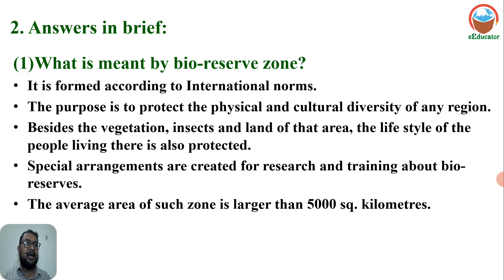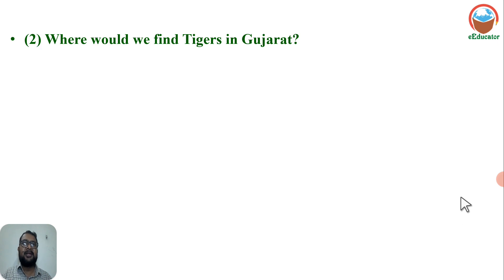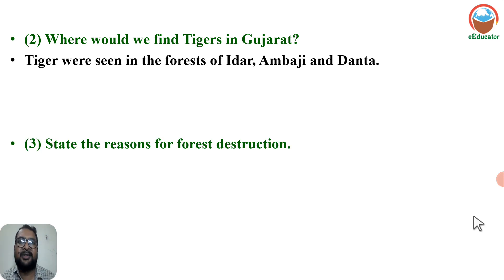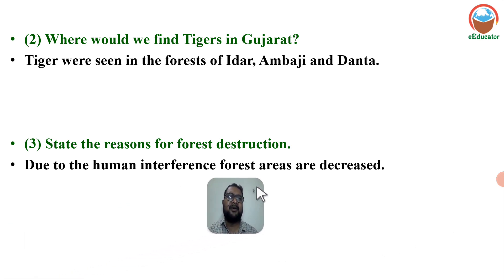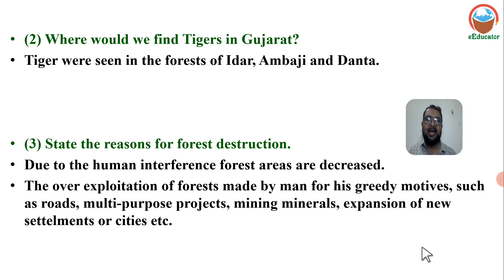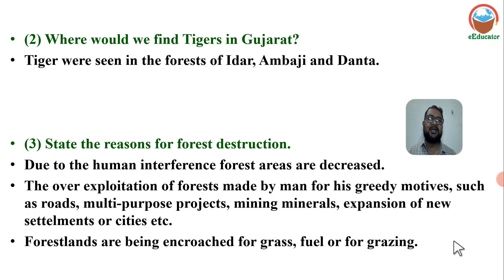Where would we find tigers in Gujarat? Tigers were seen in the forests of Idar, Ambaji, and Danta. Now tigers are totally extinct from Gujarat's forests. State the reasons for forest destruction: Due to human interference, forests are decreasing. Over-exploitation of forests for greedy motives such as road construction, multipurpose projects, mining minerals, and expansion of new settlements are the main reasons. Forest cleared areas have been encroached for grass, fuel, or grazing.